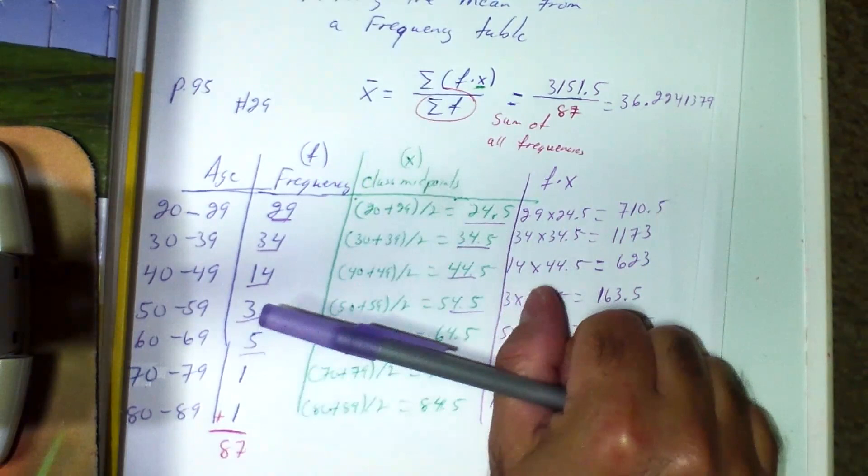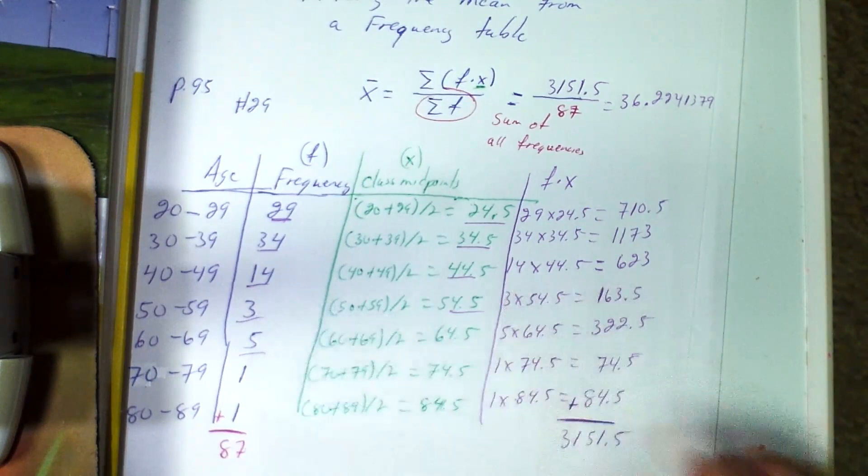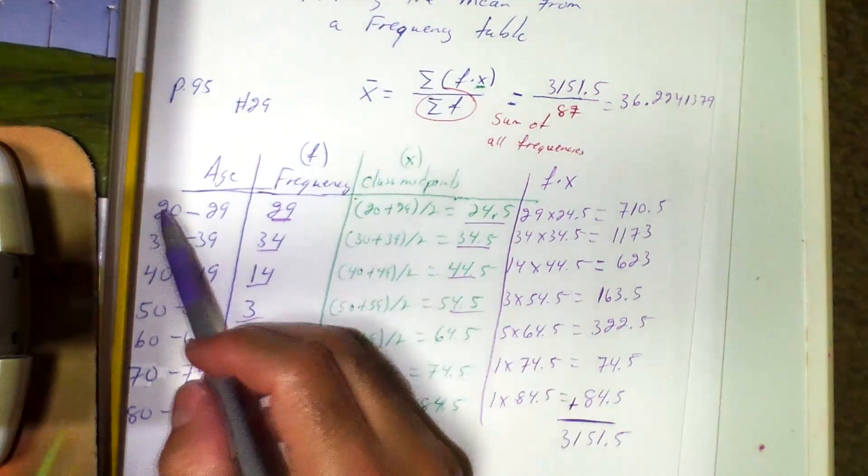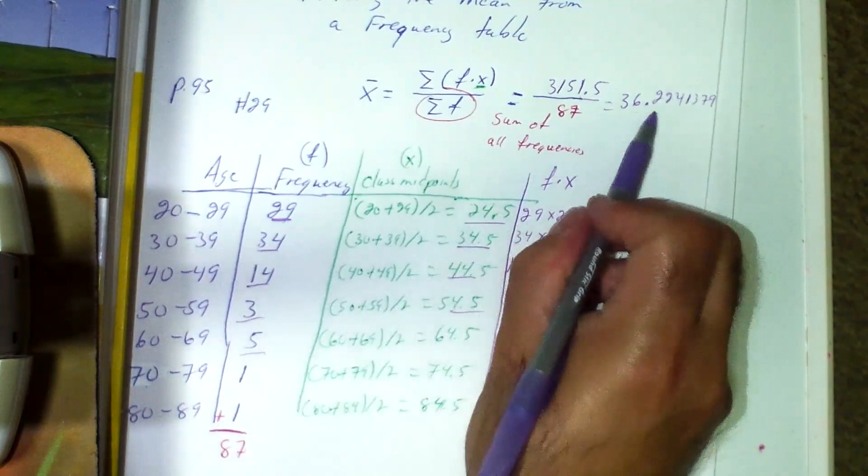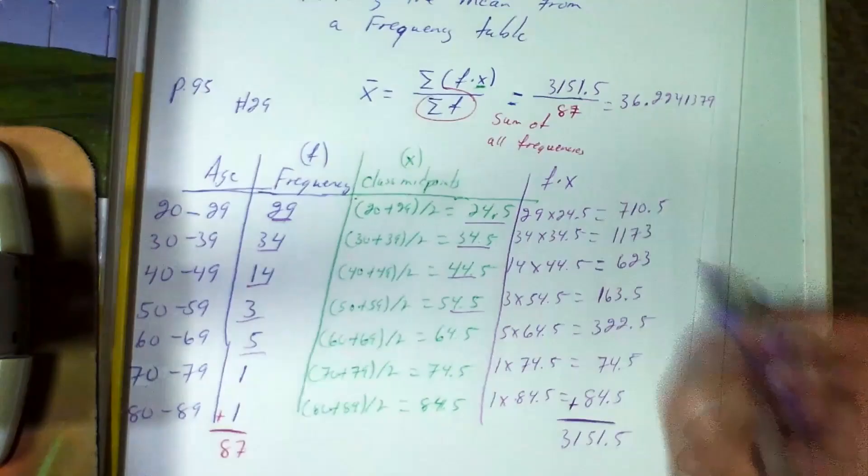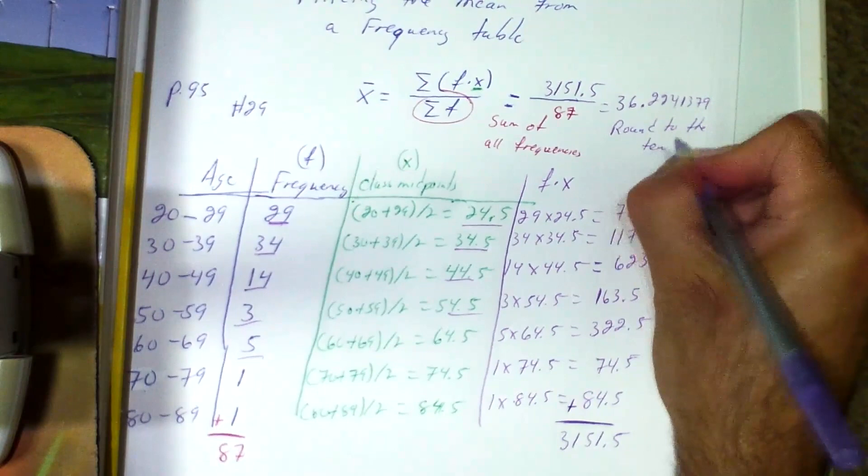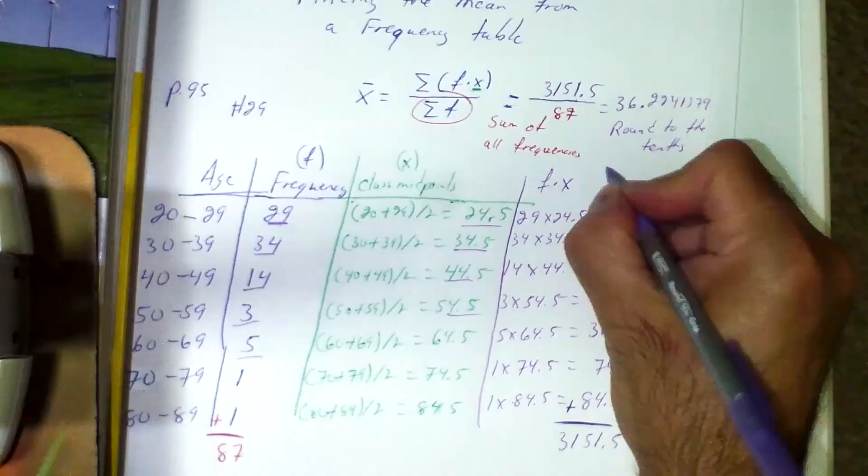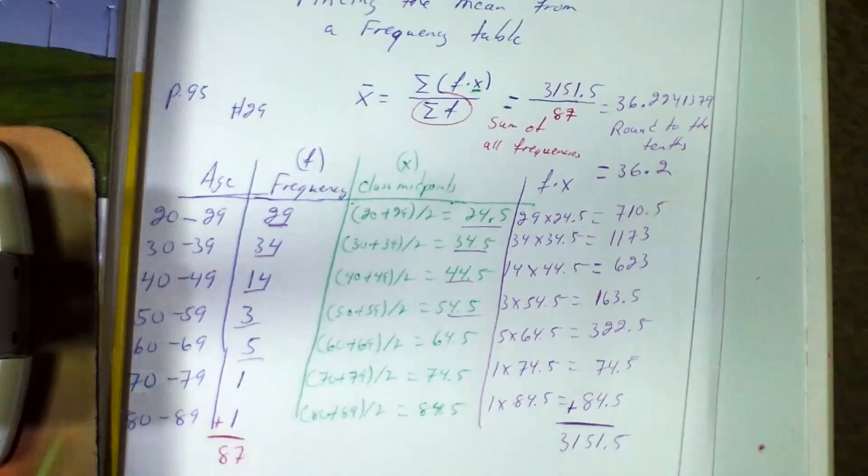So do you remember where do we round? Remember from the previous section 3.1, where do we round our mean, median, mode, mid-range, range, standard deviation, variance? Well, it all depended on how the data, the original data, were given. So on this table, we base it upon how these intervals are given. Notice our upper and lower are whole numbers, which means that I have to round this one to the tenths. So my answer for this one becomes 36.2.